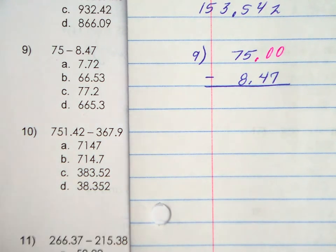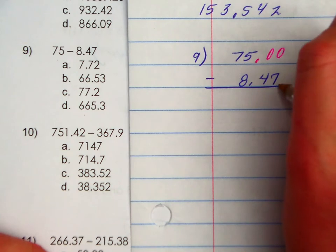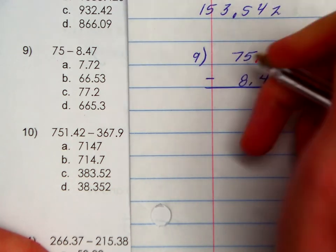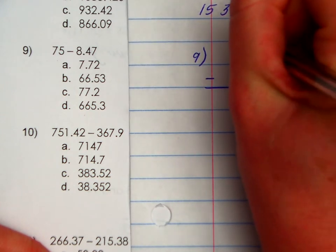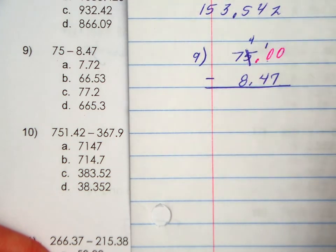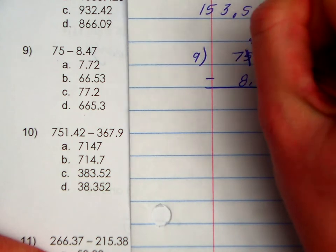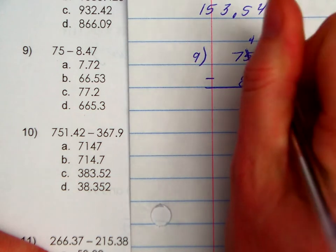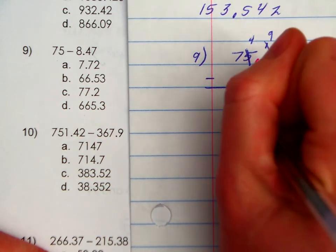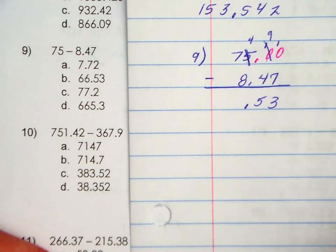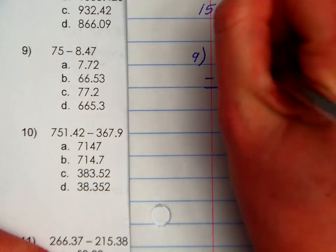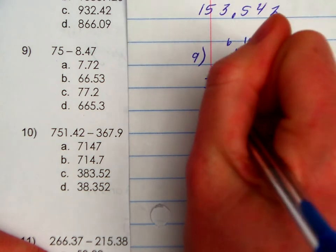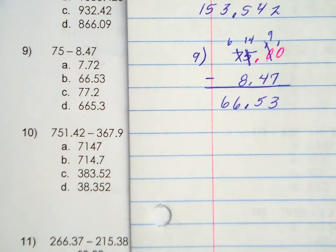Let's see if we borrow correctly. 0 can't take away 7, but I can't borrow from here. But I can go all the way over here. I'm going to regroup. I'm going to take the 5, make it a 4, which can make that one a 10. This 10 can now become a 9 and make that one a 10. 10 subtract 7 is 3. 9 subtract 4 is 5. Bring down your decimal. 4 can't take away 8. So I'm going to regroup from the 7. I'm going to make that a 6, make that a 1. 14 take away 8 is 6. 6 take away nothing is 6.